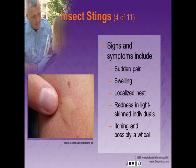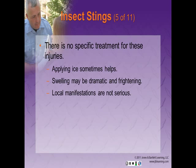Signs and symptoms of insect stings include sudden pain, swelling, localized heat, redness in light-skinned individuals, itching, and possibly a wheal, which is a raised, swollen, well-defined area on the skin. There is no specific treatment for these injuries, although applying ice sometimes makes them less irritating. The swelling associated with an insect bite may be dramatic and sometimes frightening, but these local manifestations generally are not serious.